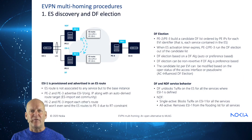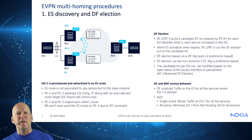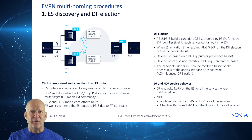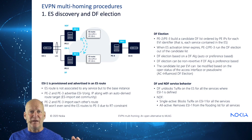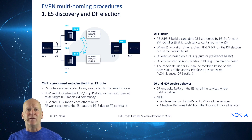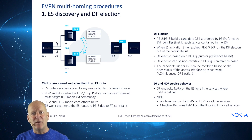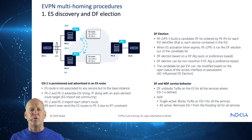For ES discovery and DF election, an ESI is provisioned and advertised in an ES route. The ES route is not associated to a service, but to the base instance. For the DF election, a DF candidate list is built of the PE IPs for each EVI identifier — that is, each service contained in the Ethernet segment. The DF election can be non-revertive if the DF algorithm is preference-based. The candidate list per EVI can be modified based on the operational status of the access interface or pseudowire — that's an attachment circuit influenced DF election.